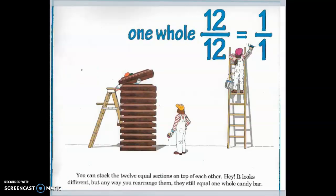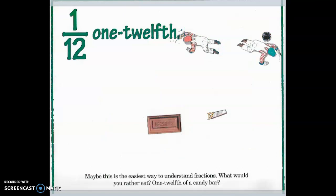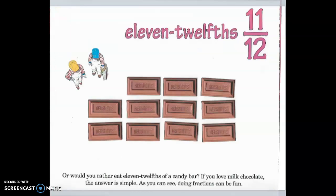One whole. You can stack the twelve equal sections on top of each other. It looks different! But any way you rearrange them, they still equal one whole candy bar. Maybe this is the easiest way to understand fractions. What would you rather eat? One twelfth of the candy bar, or would you rather eat eleven twelfths of the candy bar? If you love milk chocolate, the answer is simple. As you can see, doing fractions can be fun.